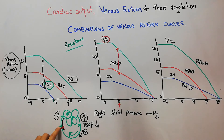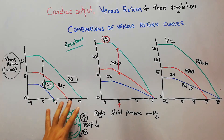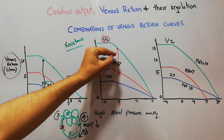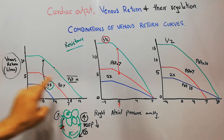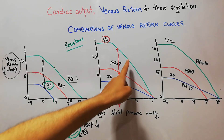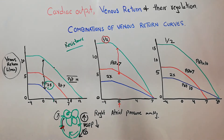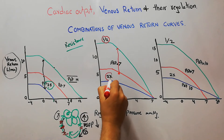Because the resistance has been dropped to one and a half, more blood is coming towards the heart, so venous return has increased even at normal right atrial pressure. The venous return has jumped from the normal five liters per minute to a higher level. But if venous resistance is doubled, the resistance to venous return is increased.